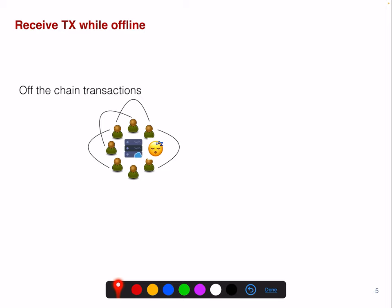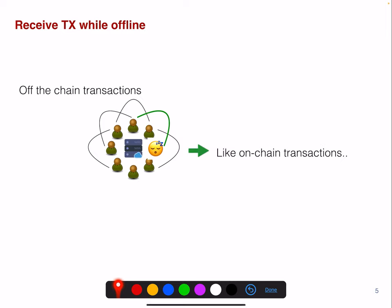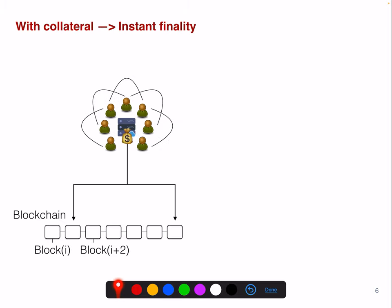One other advantage of Commit Chains is that they allow you to send transactions off-chain while a recipient is offline. A peer can be offline and still receive a transfer from another peer. That's something which is not possible in payment channels, where the recipient always has to be online to sign the receipt of a transaction. So here the behavior is rather similar to on-chain transactions.